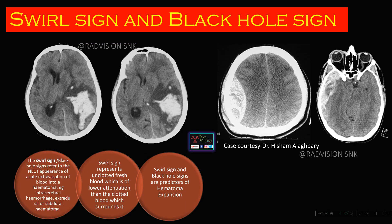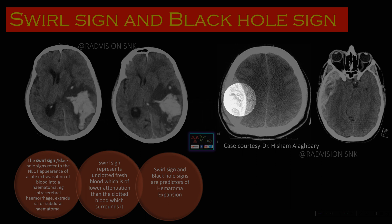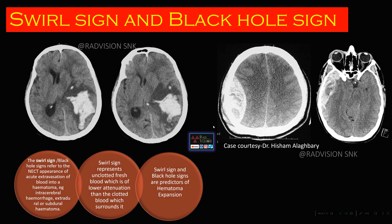Next case — we will look at the swirl sign. Here you can see in this hemorrhage there are alternating hypodense areas, which are nothing but acute extravasation of blood. This was a case of intracerebral hemorrhage; also a case of EDH where you can see alternating hypodense and hyperdense areas. The hypodense area is unclotted blood and the hyperdense area is clotted blood. This other case of HDH also shows alternating hypodense and hyperdense bands which make the swirl.